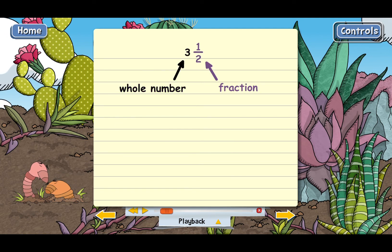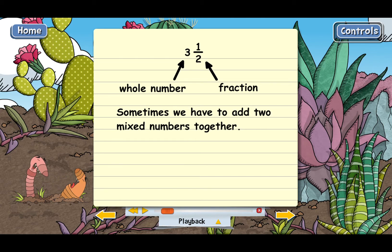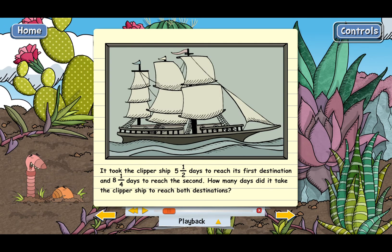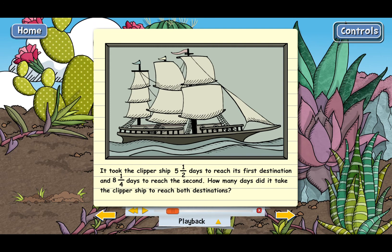Well, sometimes we have to add two mixed numbers together. Let's look at an example like that. It took the clipper ship five and a half days to reach its first destination and eight and one-fourth days to reach the second. How many days did it take the clipper ship to reach both destinations?